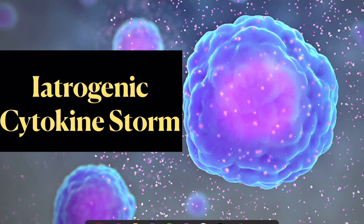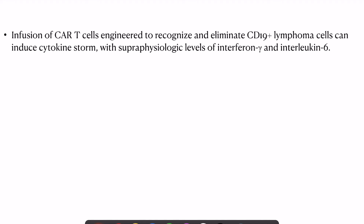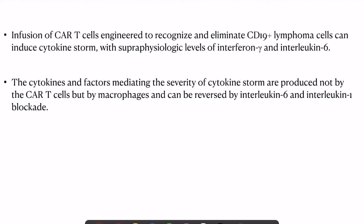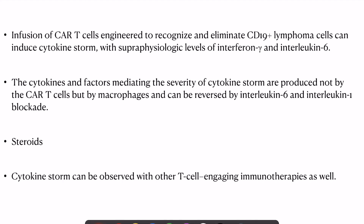The first type of cytokine storm is iatrogenic, typically seen with CAR-T cell therapy used to eliminate CD19 lymphocyte cells. It can induce cytokine storm by increasing levels of interferon-gamma and IL-6. The severity is driven not by the CAR-T cells themselves but by macrophages which cause increased IL-6 levels. It can be reversed by blocking IL-6 and IL-1, and steroids can also be used. Cytokine storm can also occur with other T-cell engaging immunotherapies.